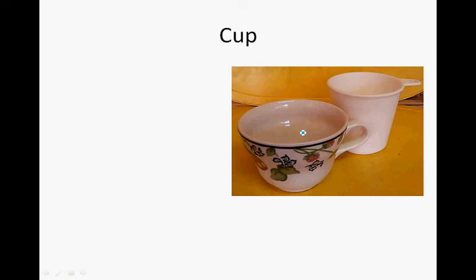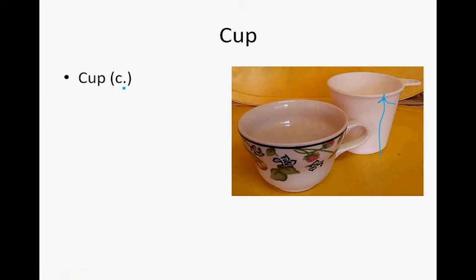A cup. This is a picture of a cup next to a measuring cup. You'll see that the measuring cup is much higher than the cup, but the cup is a little bit wider than the measuring cup, so their capacity might be more or less the same. The abbreviation for cup is C with a dot next to it, and that is about 250 milliliters.